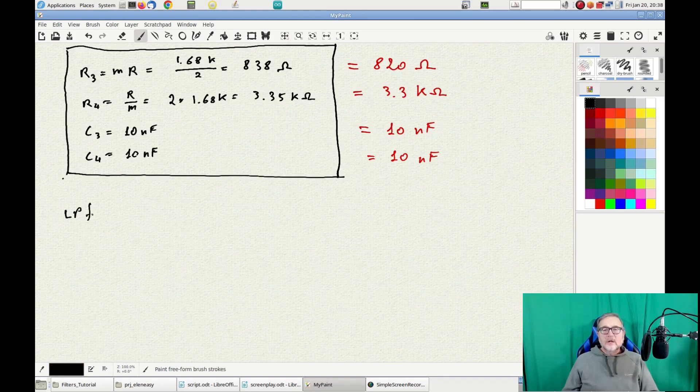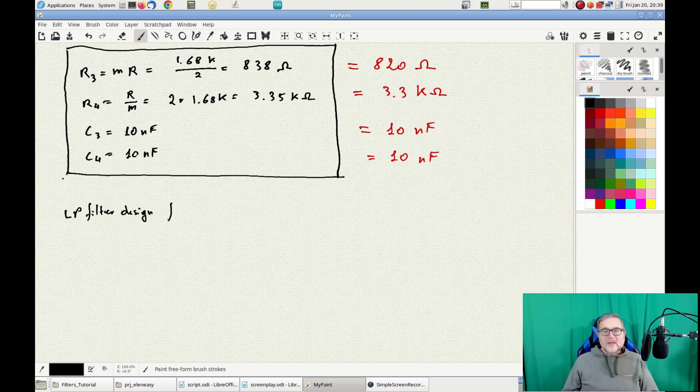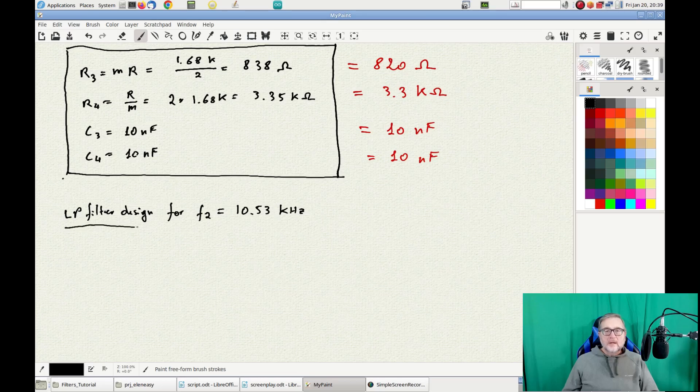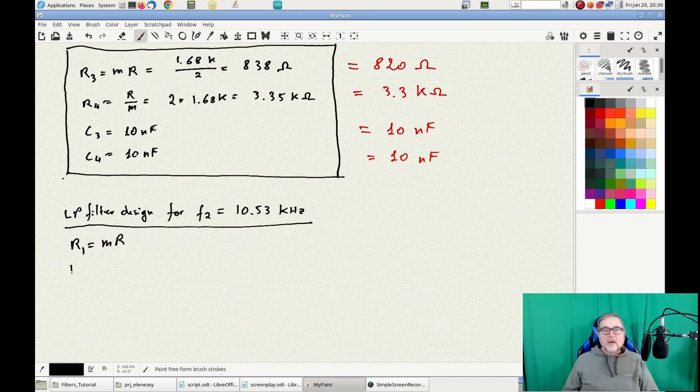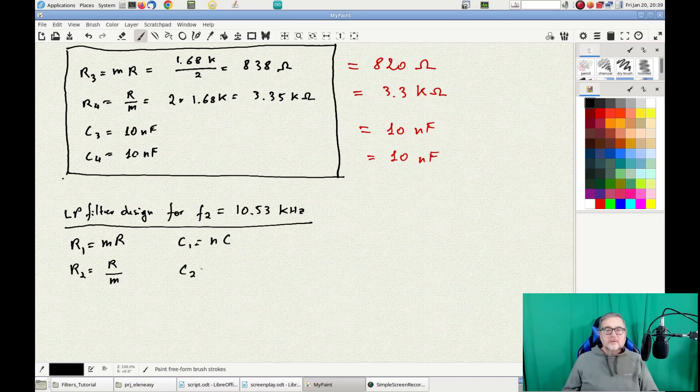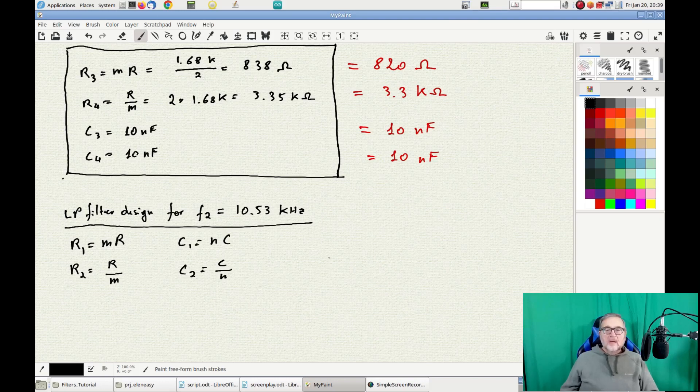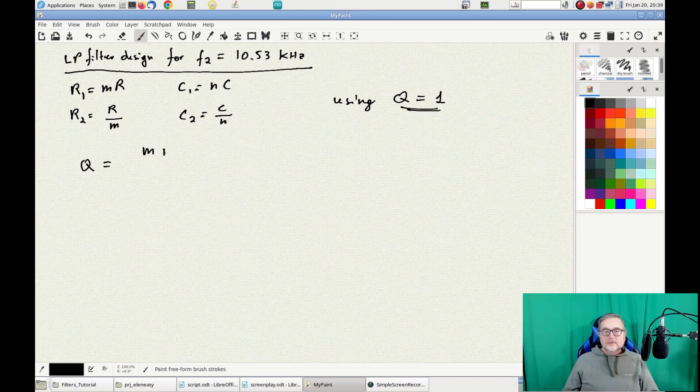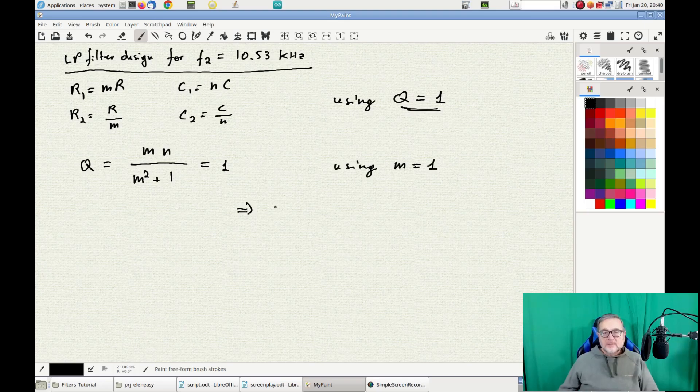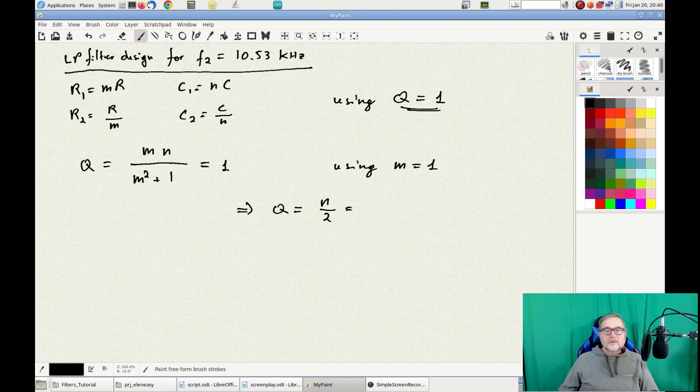Now, let's take care of the low-pass section of the filter. This one must have a cutoff frequency F2 equal to 10.53 kHz. Using again the intermediate variables M and N, we again define R1 equals M*R, R2 equals R over M, C1 equals N*C, and C2 equals C over N. And again we need to use a Q equal to 1. Using the definition of Q for the low-pass filters, and fixing M to 1 so we can use identical resistors, we obtain that N must be equal to 2.